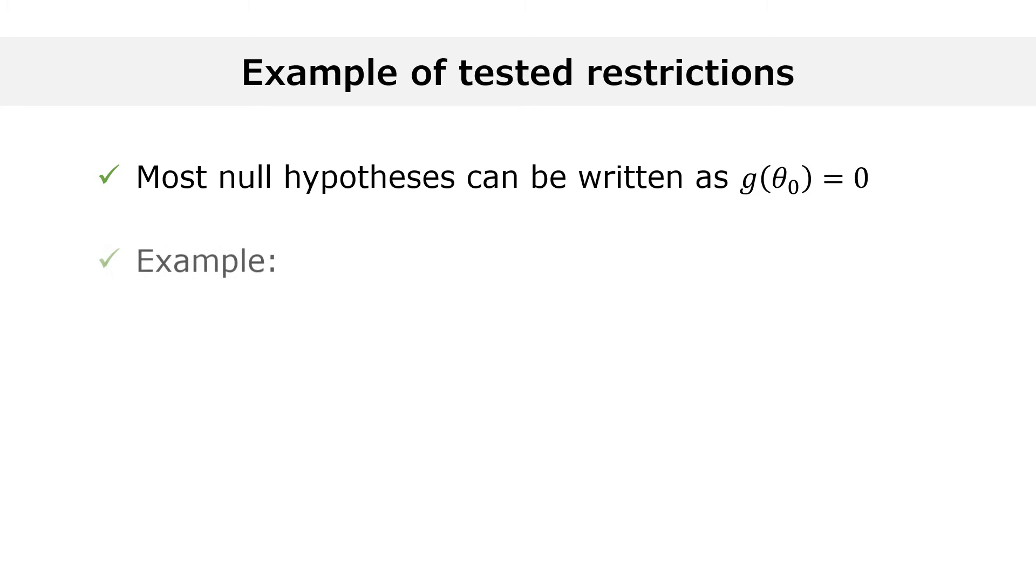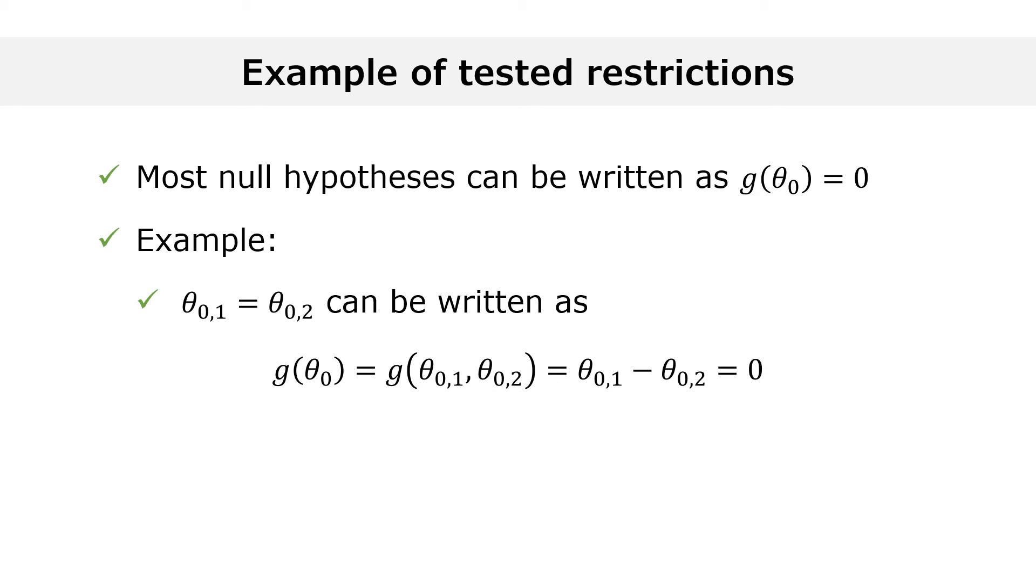As an example, consider a two-dimensional parameter vector. We denote its entries by theta zero one and theta zero two. Suppose that we want to test the hypothesis that theta zero one is equal to theta zero two. This is the same as theta zero one minus theta zero two equals zero.